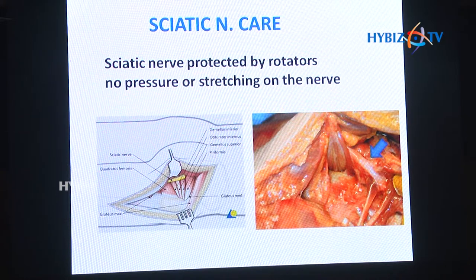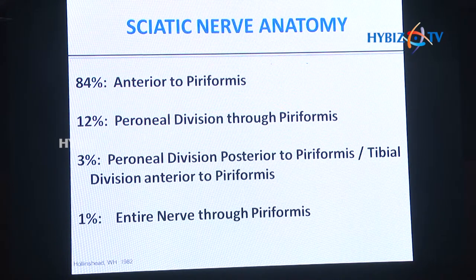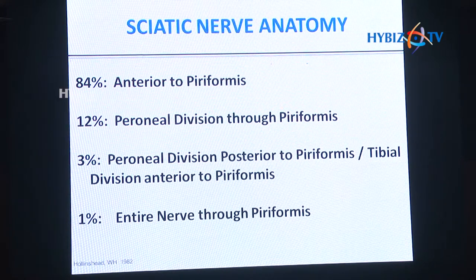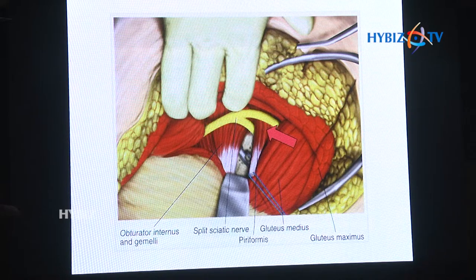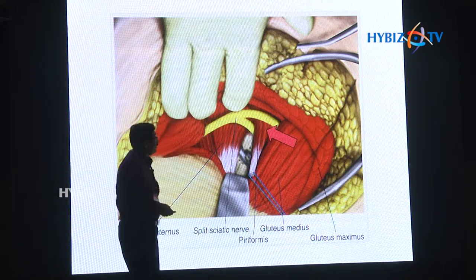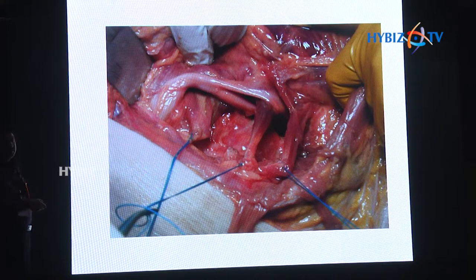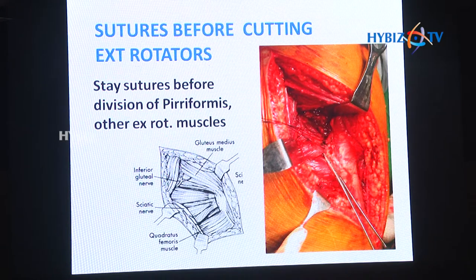That is why you have to keep the hip in extension and knee always in flexion. One should remember that the sciatic nerve in approximately 84% of cases passes anterior to the piriformis, but anomalies exist: 12% have the peroneal division through the piriformis, and 3% of cases have the peroneal division posterior to the piriformis with the tibial division anterior. In some cases there is a clear cut division of the sciatic nerve, so you have to protect this carefully.